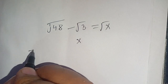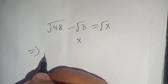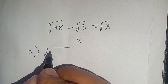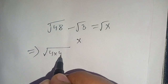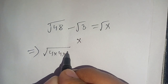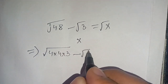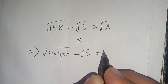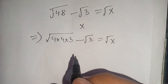First of all, we can write it as square root of 48, which can be broken down as 4 times 4 equals 16, and 16 times 3 equals 48. So we have square root of 48 minus square root of 3 is equal to square root of x.